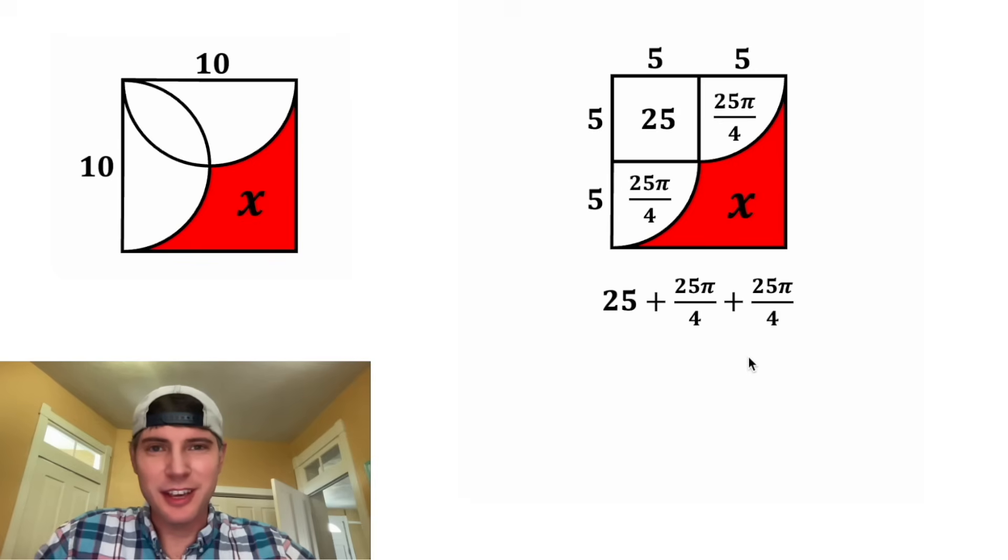We can just add these three things together. 25π over 4 plus 25π over 4 would be 50π over 4. We can simplify this to 25π over 2. This is the area of our white region.